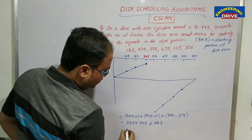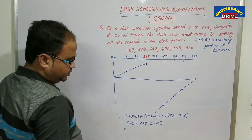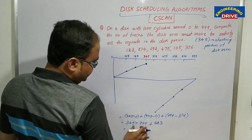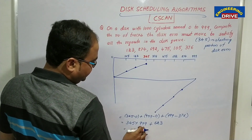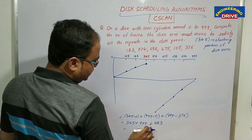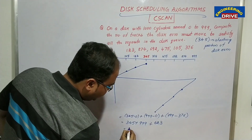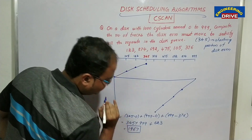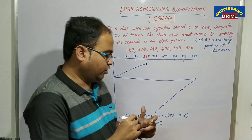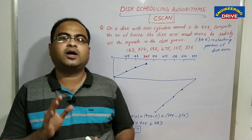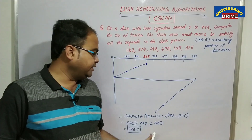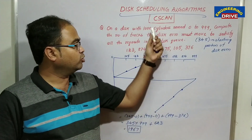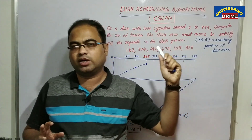Adding all three numbers together gives us 1967. So in order to fulfill the request, the disk arm must move 1967 number of tracks. That is the answer obtained using the circular scan disk scheduling algorithm.